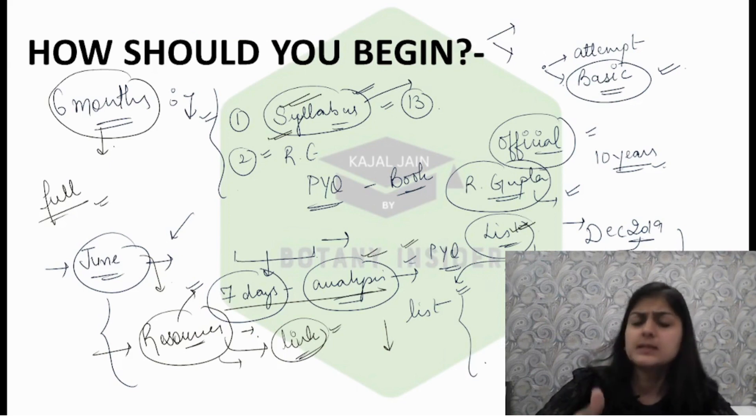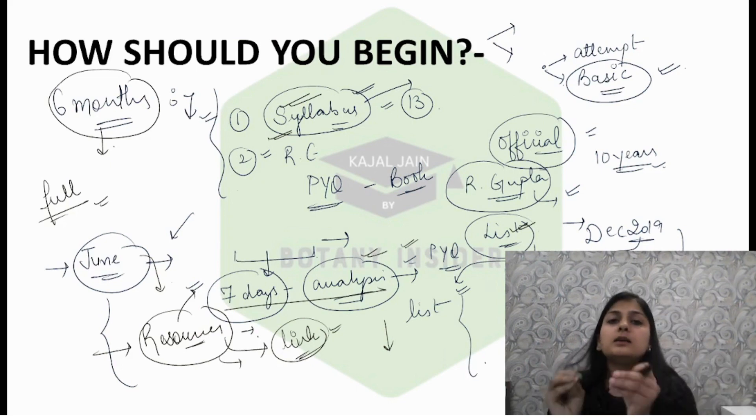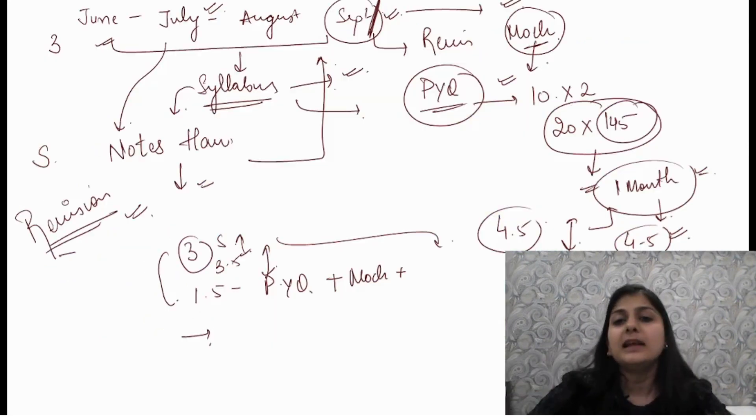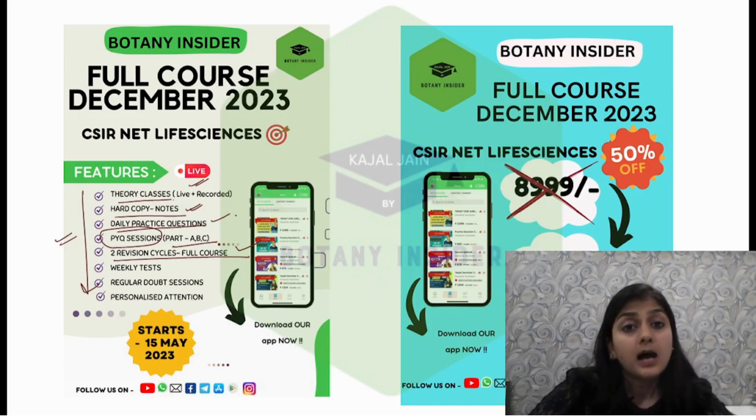Start with the syllabus and previous year book, collate these two, understand the papers, make a list of topics, start with resource refinement - it could be notes, standard books, or YouTube videos. If you feel like getting work done in a more simplified manner, we have a full course available at very affordable prices with hard copy notes and no additional hidden charges.